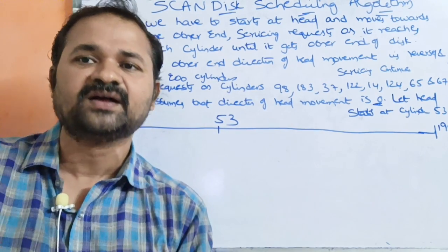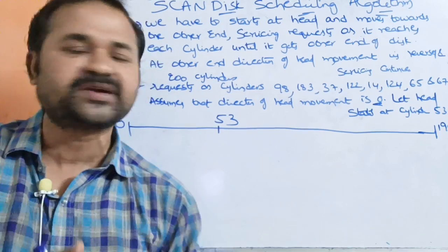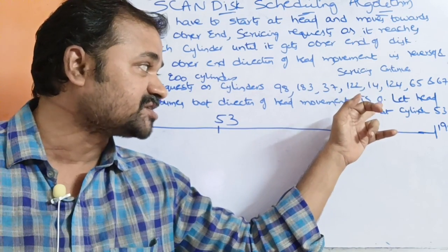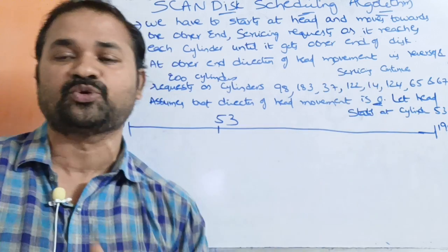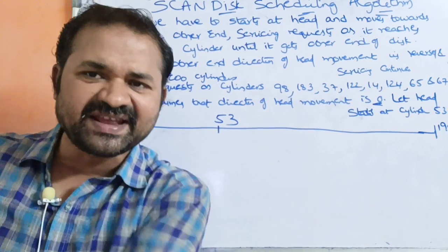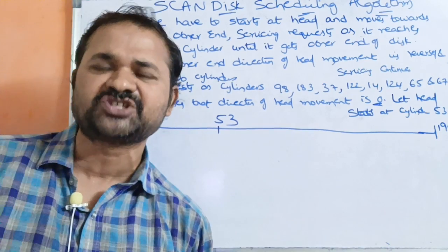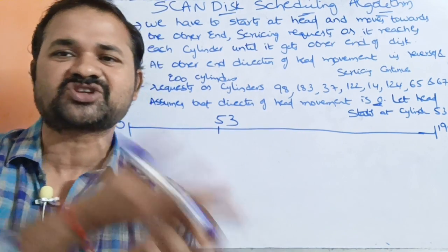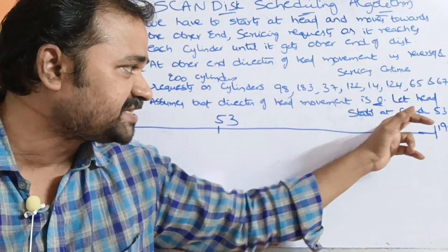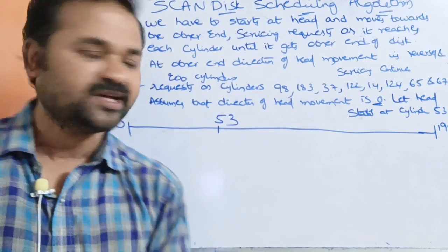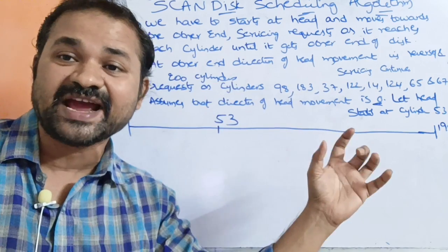Since the direction of head movement is given as 0, we move toward the start end. If no direction is given, it is our choice to traverse toward the start or final end. Let the head start at cylinder 53, so initially the read/write head is at 53 and direction of movement is toward 0.